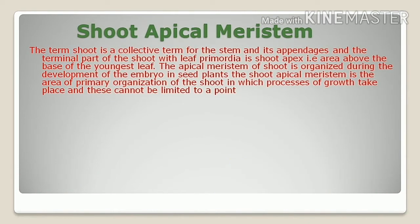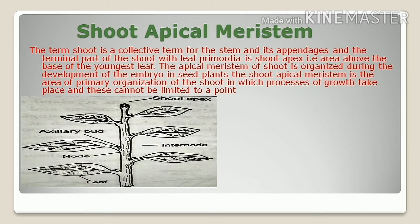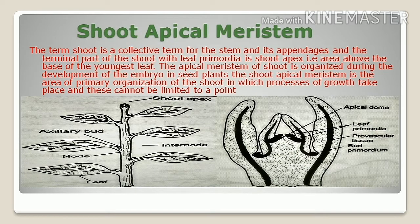The term 'shoot' is a collective term for the stem and its appendages. The terminal part of the shoot with leaf primordia is known as the shoot apex — that is, the area above the base of the youngest leaf. The apical meristem of the shoot is organized during the development of the embryo in seed plants. The shoot apical meristem is the area of primary organization of the shoot in which the processes of growth take place.